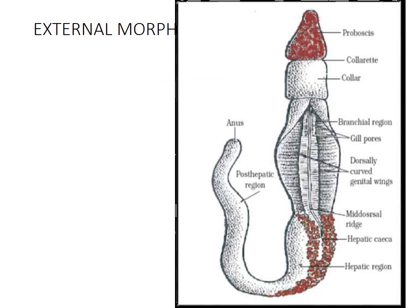The body is divided into three regions: the anterior proboscis, the middle region known as the collar, and a large trunk. The trunk can be divided into three regions: the branchial region, the hepatic region, and the tail region or post-hepatic region. This is the overall structure of Balanoglossus.